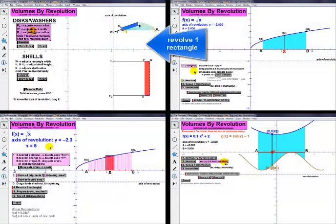The first page in this file rotates one rectangle perpendicular to the axis of revolution, forming a washer since it's not attached to that axis. Dragging allows you to close the gap to form a disk instead.